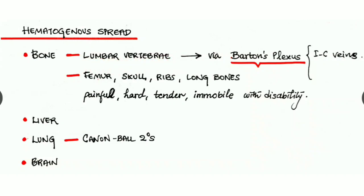Next we have to look at hematogenous spread, mainly into the bone, that is the lumbar vertebra via Batson's plexus and the intercostal veins. It can spread to the femur, skull, ribs, and even the long bones. They are painful, hard, tender, and immobile with disabilities. Via the blood it can spread to the liver and to the lungs. They form the cannonball secondaries seen in chest x-rays, and via the blood they can spread to the brain too.